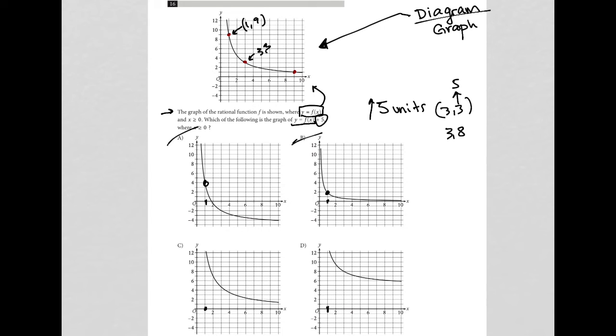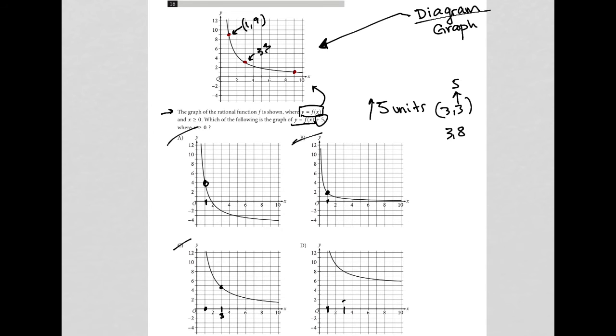So looking at choice c, at 3, it's down here close to 5. So that's not 3, 8. So that's gone. Here at 3, we are exactly at 8. So that's why choice d is the correct answer.